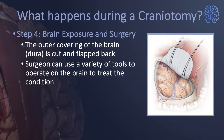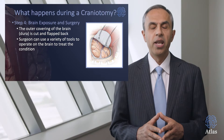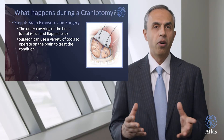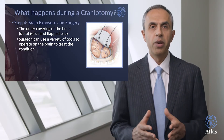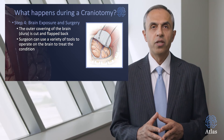Step four is the brain exposure and surgery. The outer covering of the brain — in other words, the dura — is cut and flapped back. The surgeon can use a variety of tools to operate on the brain to treat the brain tumor, arteriovenous malformation, or other conditions.